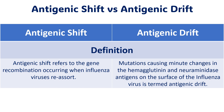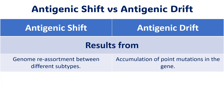Antigenic shift refers to gene recombination that occurs when influenza viruses from different host organisms co-infect the same host cell at the same time. Antigenic drift involves mutations causing minor changes, especially in surface proteins like hemagglutinin (HA) or neuraminidase (NA), resulting in minor point mutations in these proteins. Antigenic shift results from genome reassortment between different subtypes, whereas antigenic drift occurs because of small cumulative point mutations.